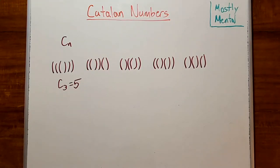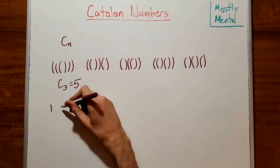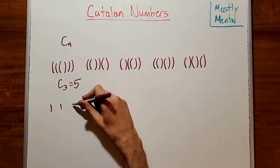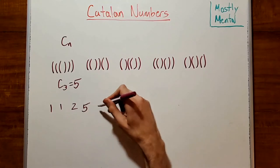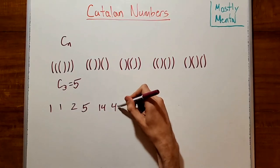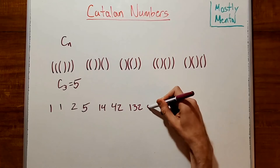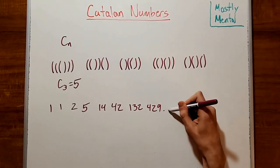And the first few Catalan numbers are C sub 0 is 1, C sub 1 is 1, 2, 5, 14, 42, 132, 429, and so on.